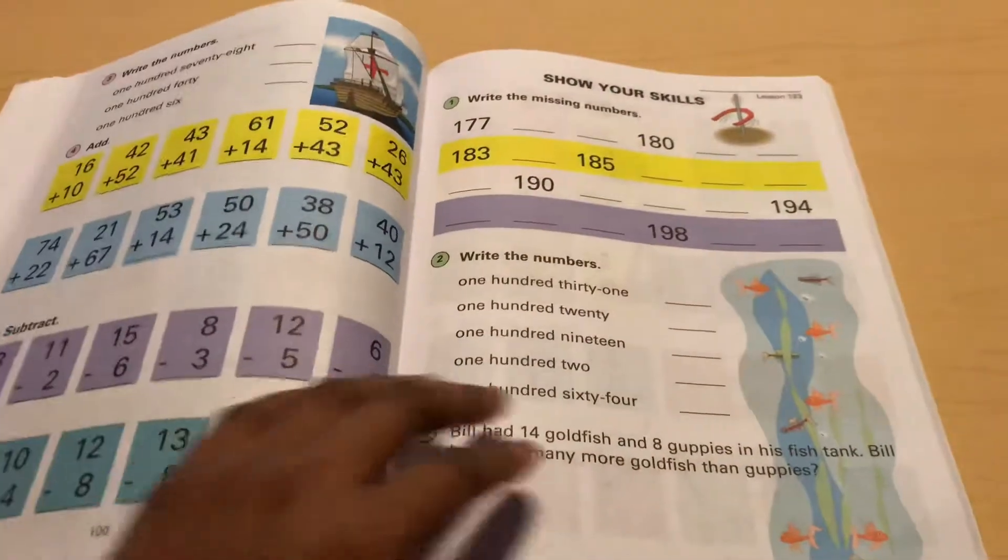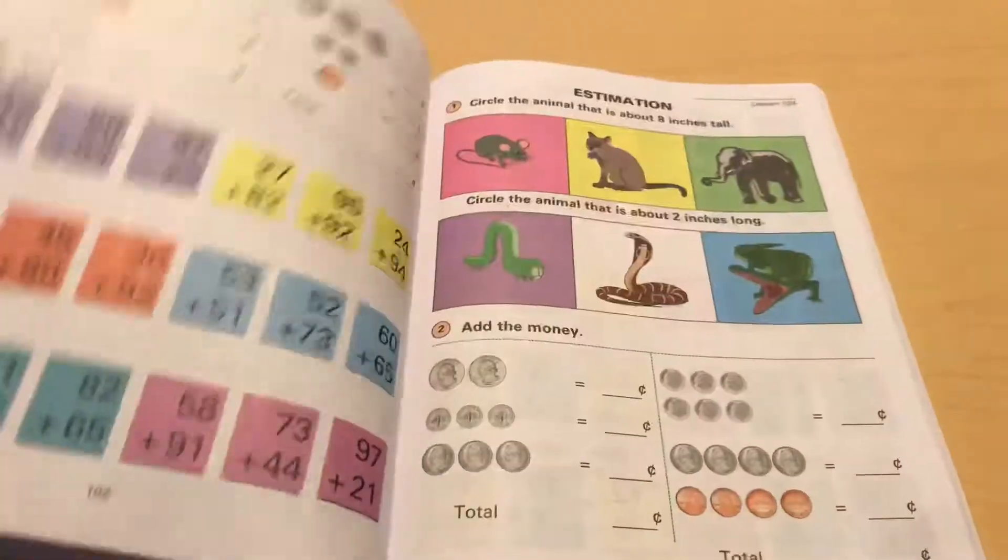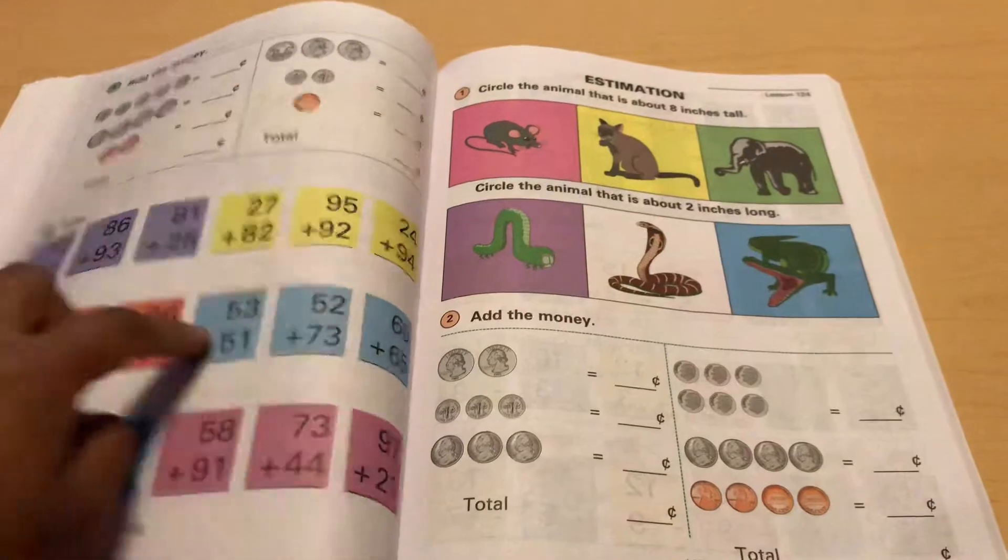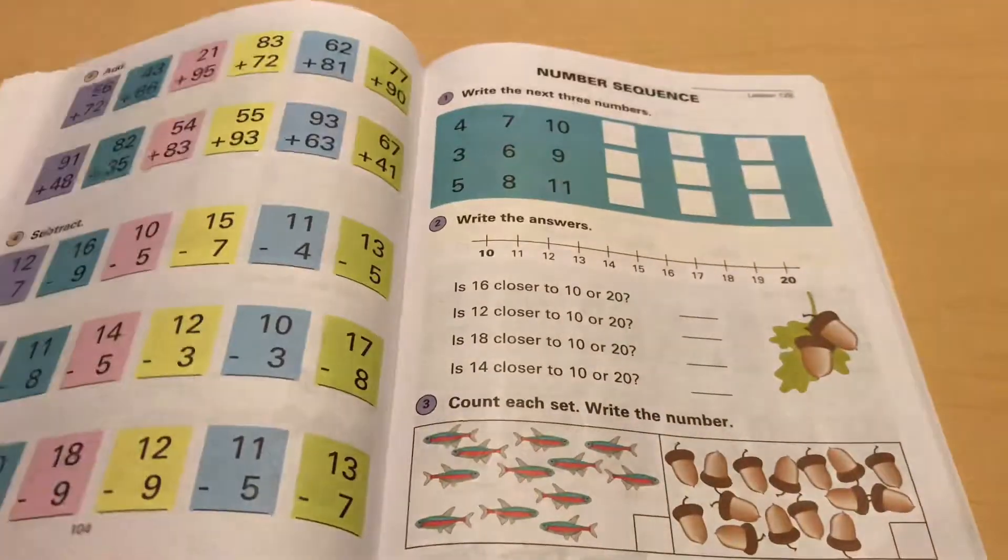So we're going to continue a lot of addition as you see, a lot of subtraction, like literally every page they have that, also a lot with money and time.